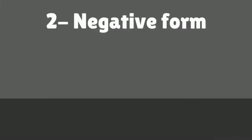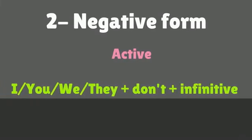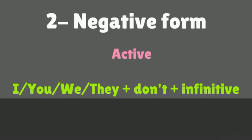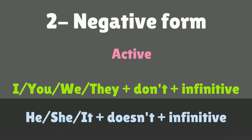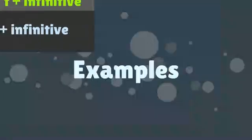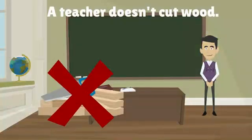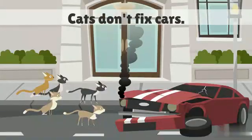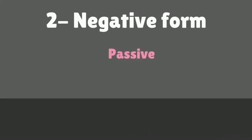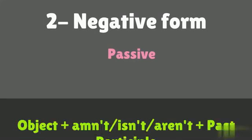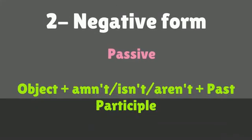Negative Form — Active: I, You, We, They plus don't plus infinitive; He, She, It plus doesn't plus infinitive. Examples: A teacher doesn't cut wood. Cats don't fix cars.